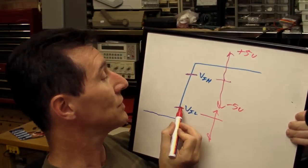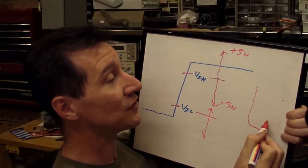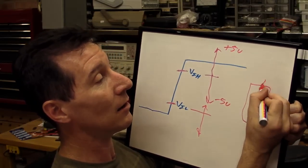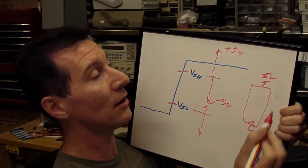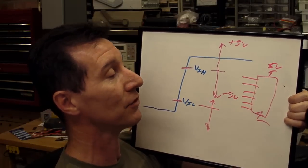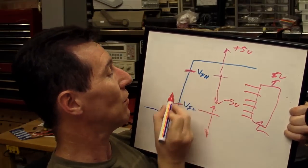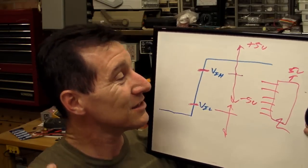The other type will just have fixed thresholds because they'll just use a simple 3-volt or 5-volt logic gate straight on the input or something like that. These thresholds are going to be fixed, and that's what you get. That's the disadvantage of the low-priced logic analyzers.